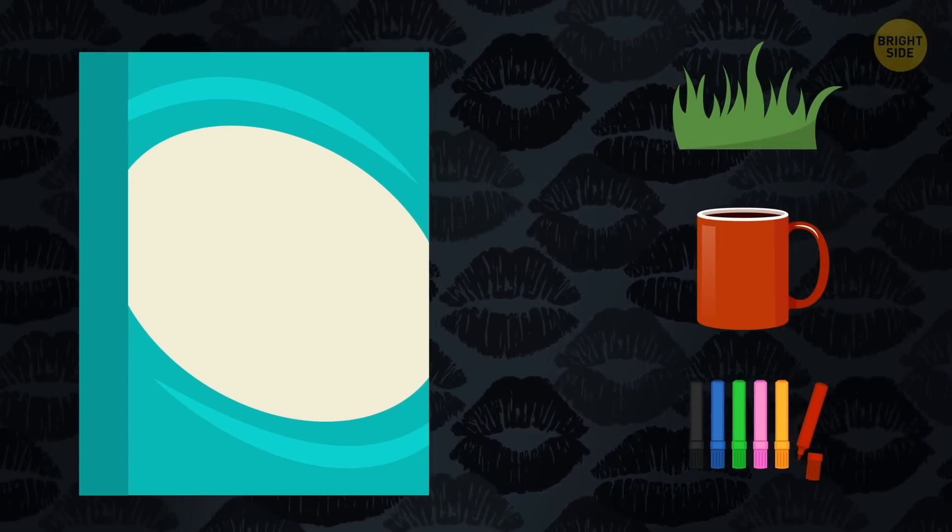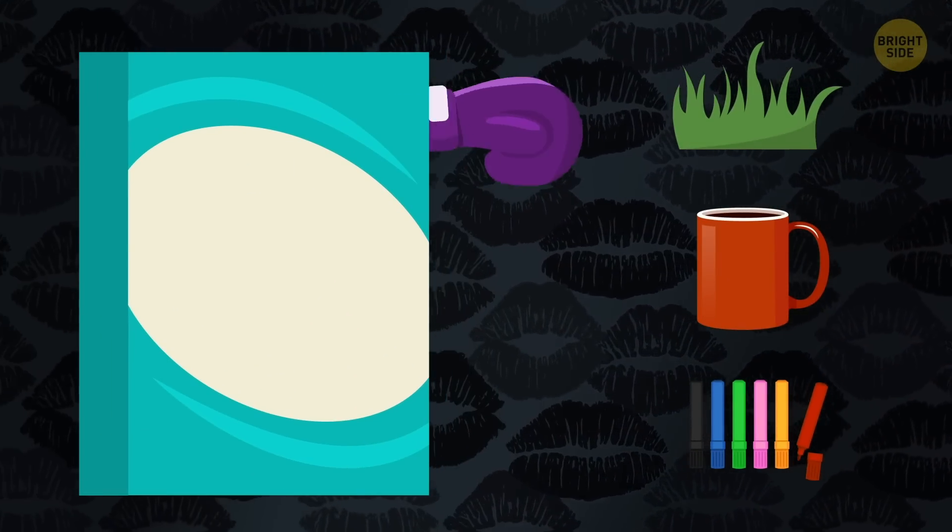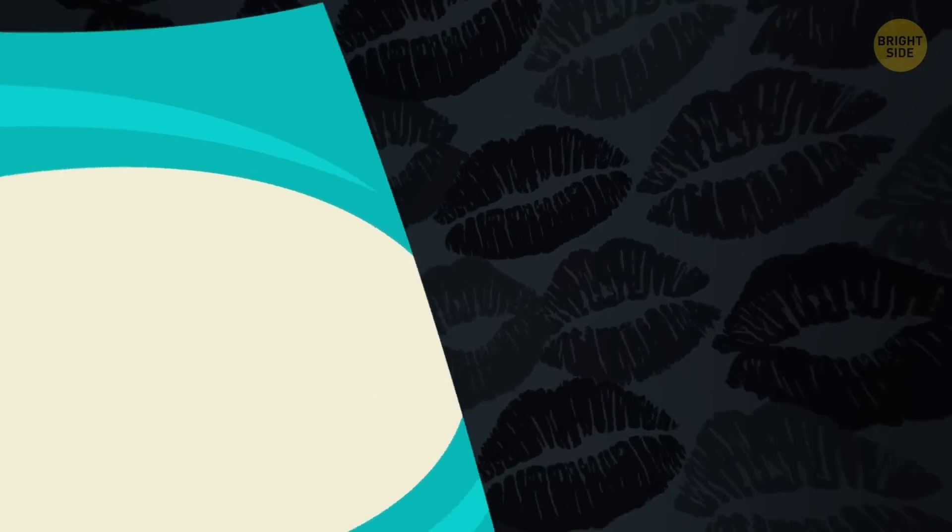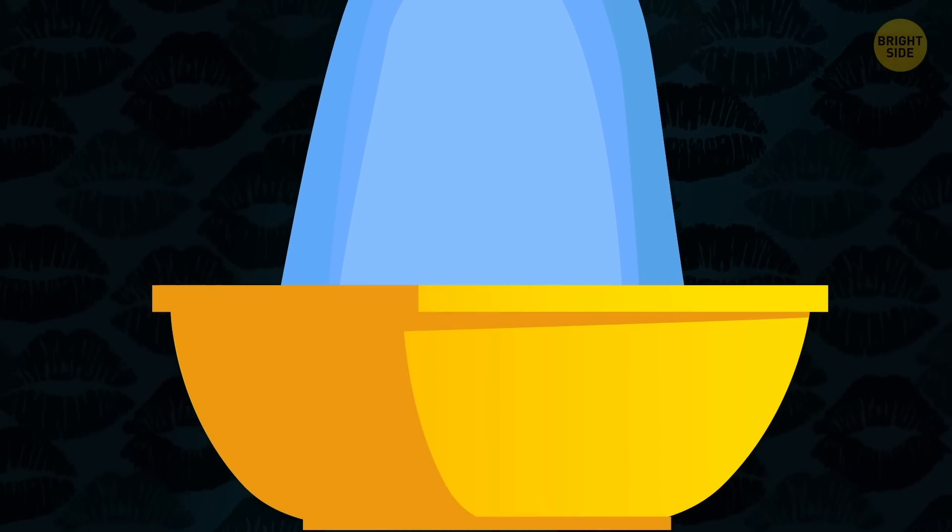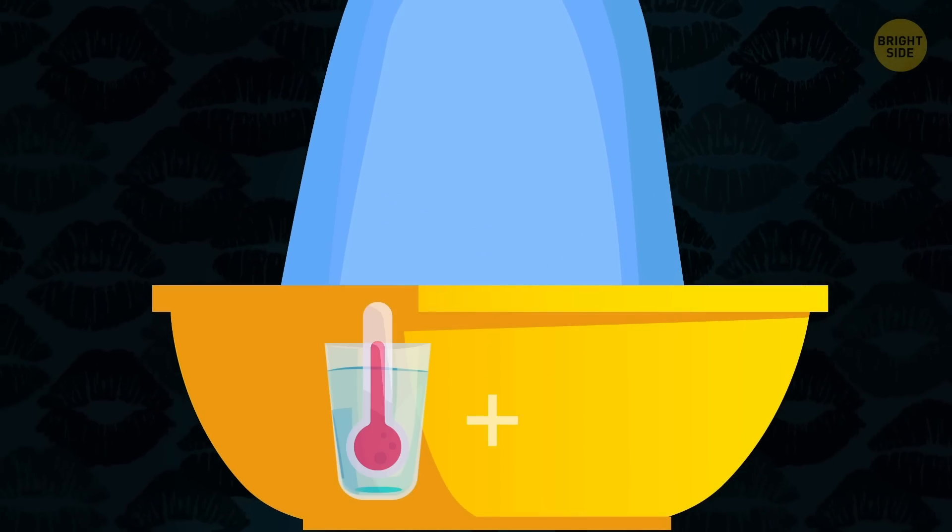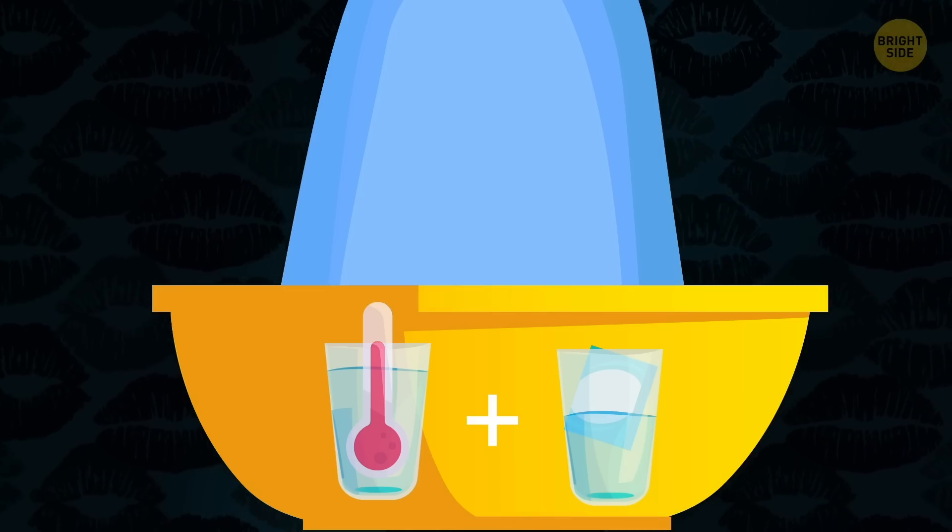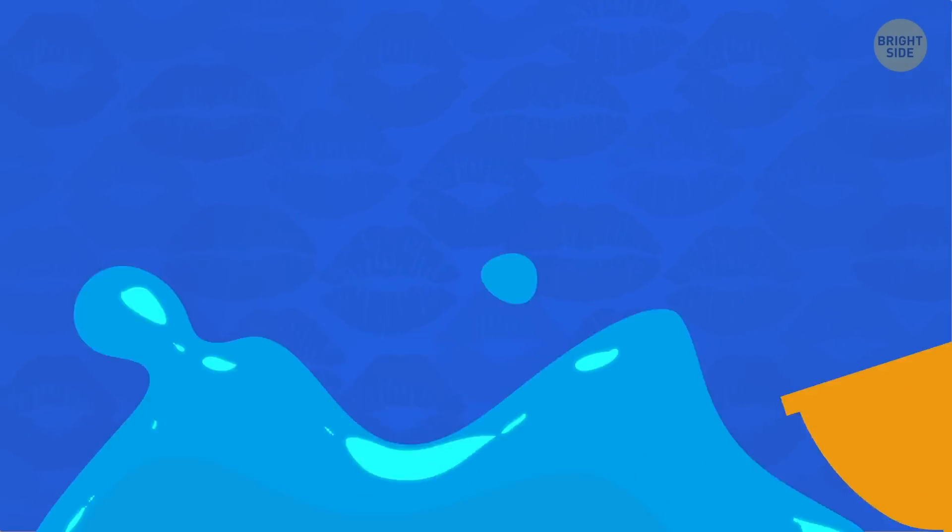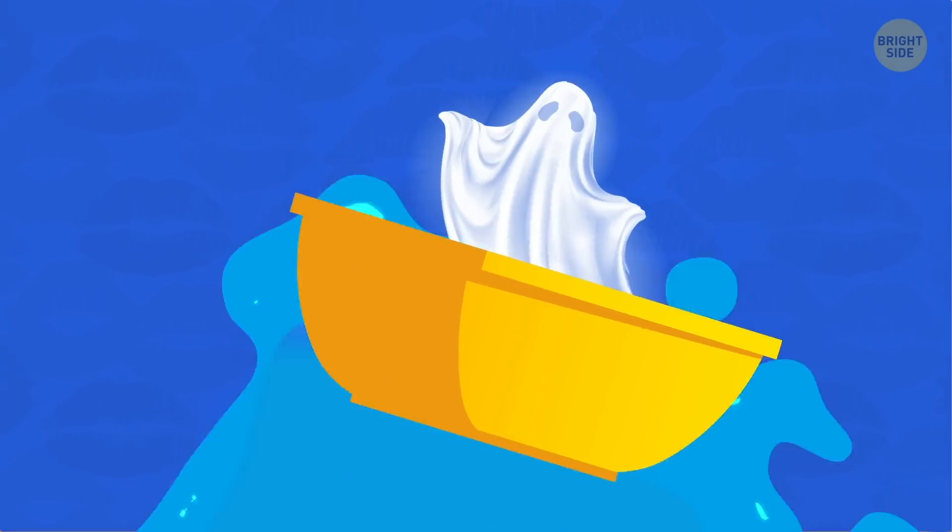Borax is also effective when you need to get rid of tough stains left by grass, coffee, and markers. Put a stained piece of clothing in a solution made of one cup of warm water and half a cup of borax. Let it soak for an hour, then wash. Want to know the best thing about this method? It's safe even for the most delicate fabrics.